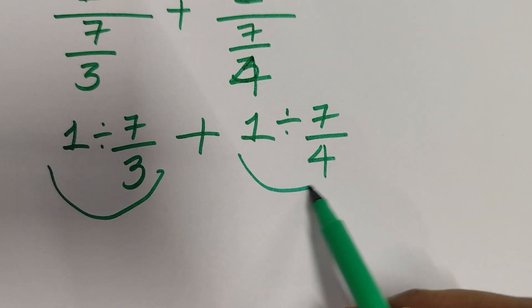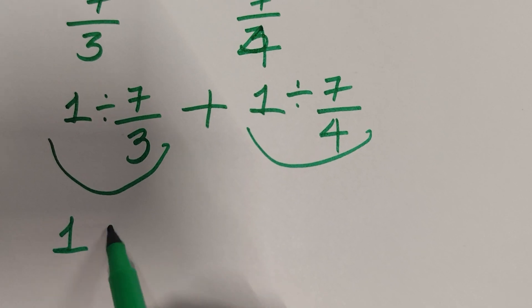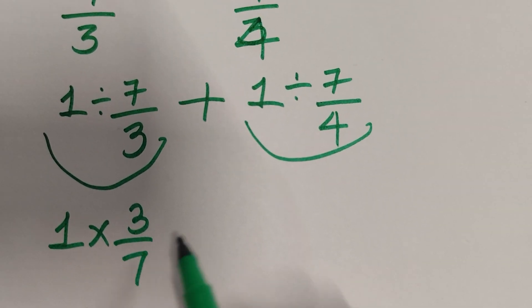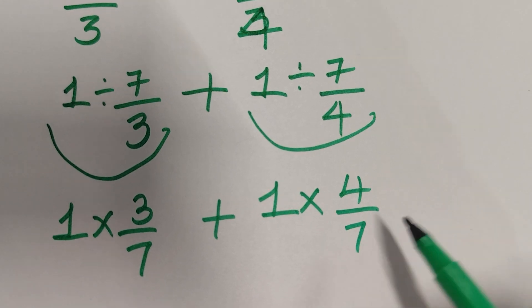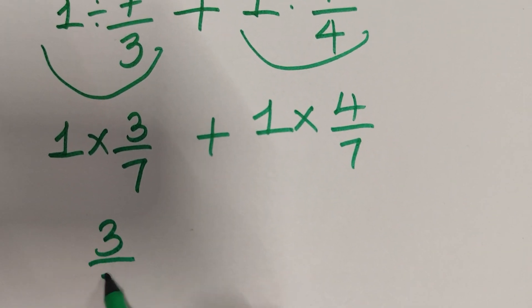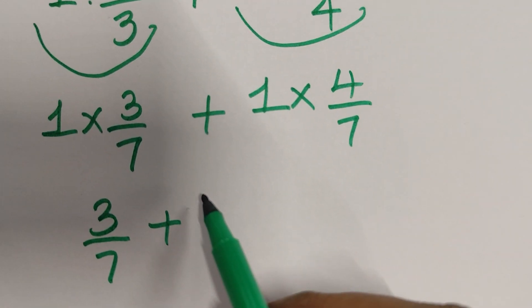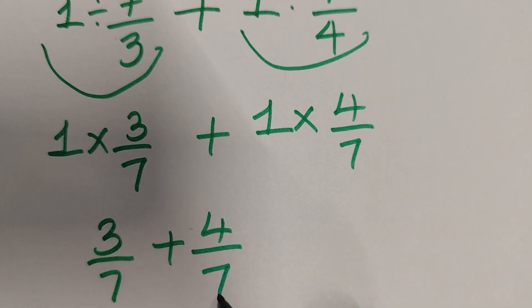Now division and division, I am doing that. 1 into reciprocal 3/7 plus 1 into reciprocal 4/7. So I will get 1 times 3/7 is 3/7 plus 1 times 4/7 is 4/7.